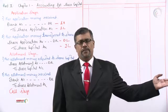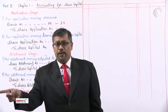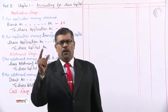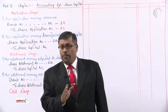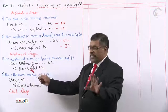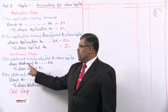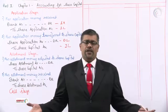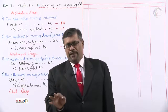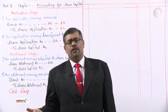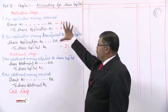For application: first entry is money received, second entry is money transferred to share capital. For allotment: two entries — money adjusted first to share capital, then money received. Same for call: first entry is call money adjusted to share capital — Share Call Account debit to Share Capital; second entry is call money received — Bank Account debit to Share Call Account. There are two entries in each stage.